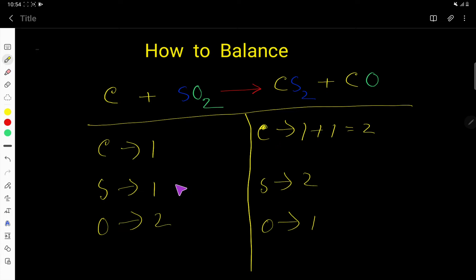Sulfur: 1 here, 2 here. You can multiply SO₂ by 2, giving us 2. This 2 must come before sulfur. So we have to place 2 here. The number of sulfur is 2, and oxygen will be 2 times 2, that is 4.